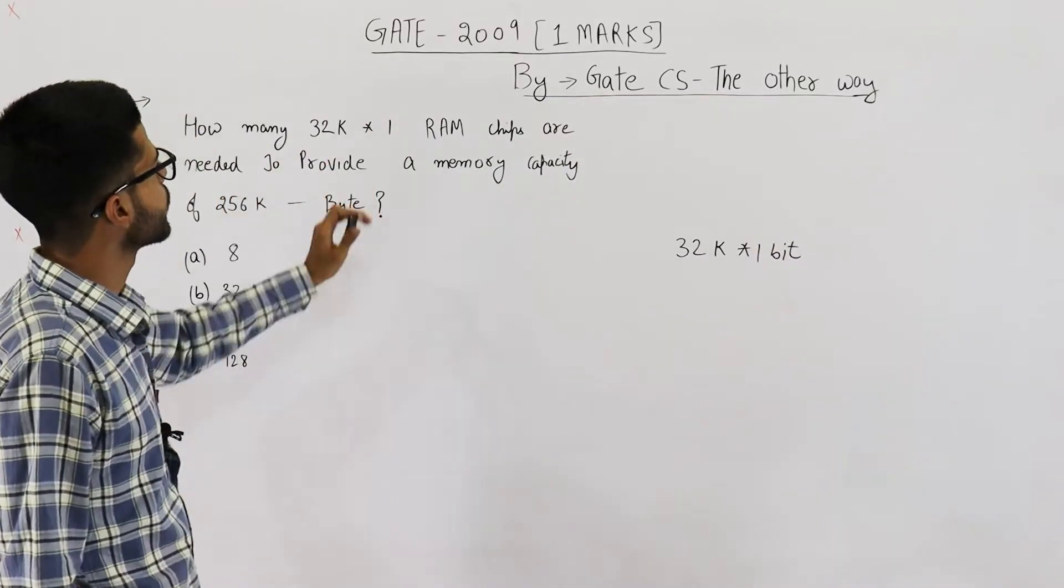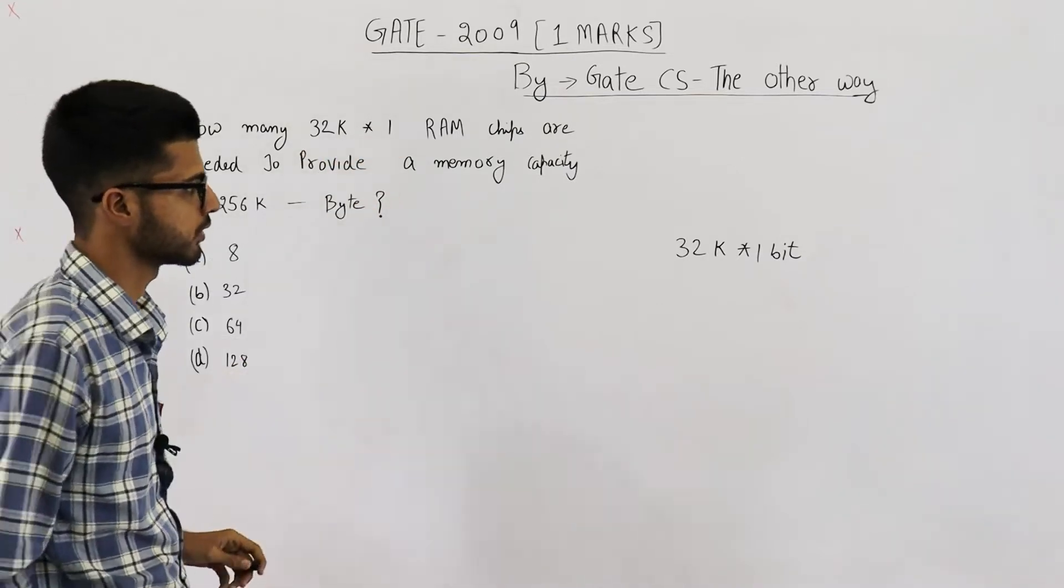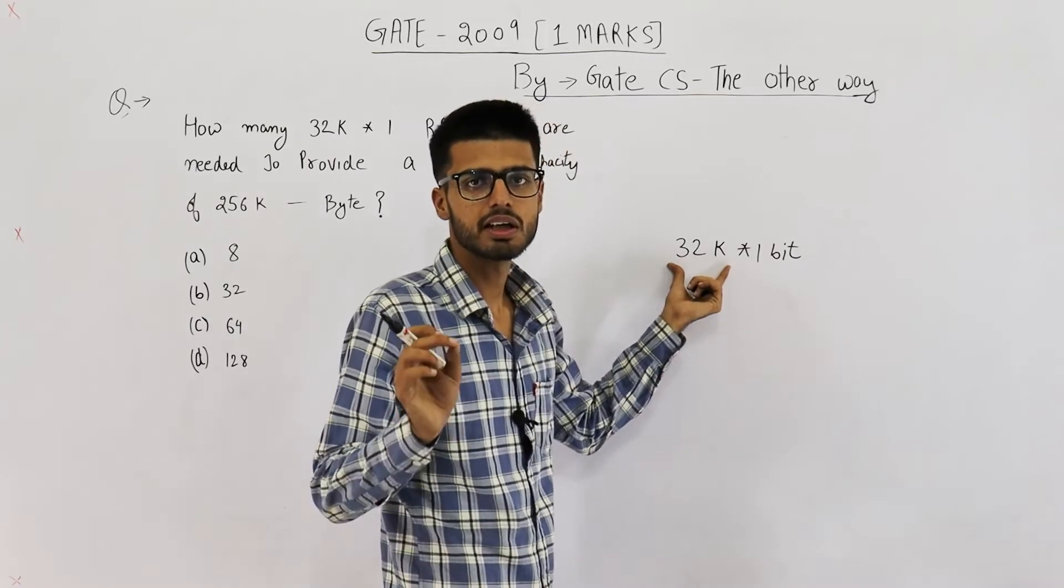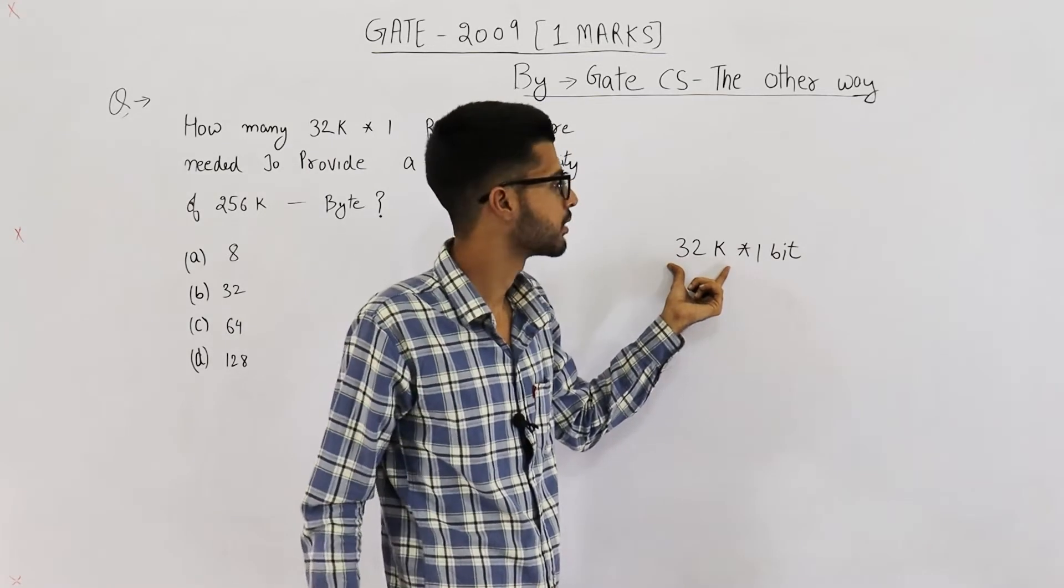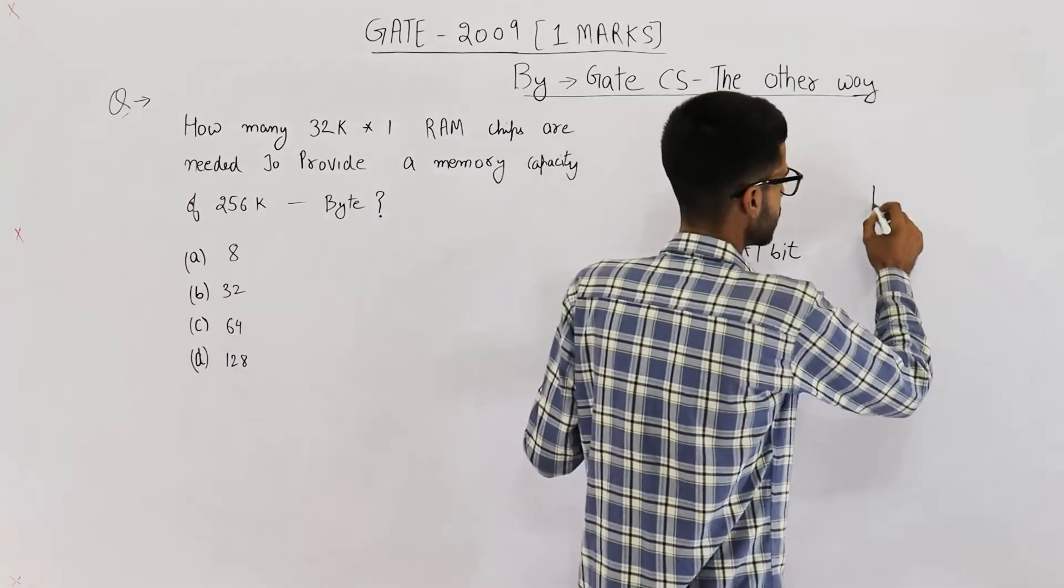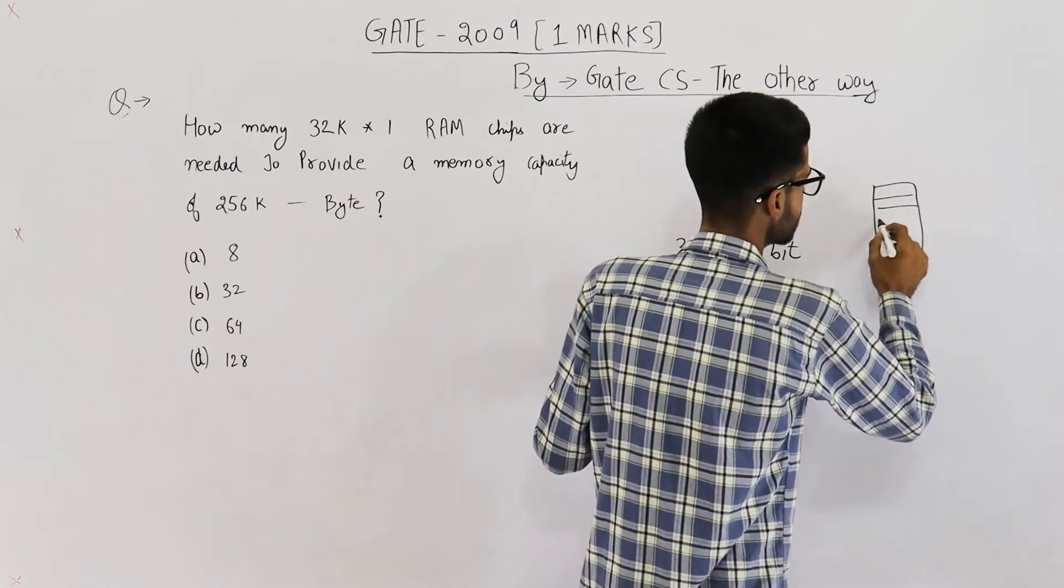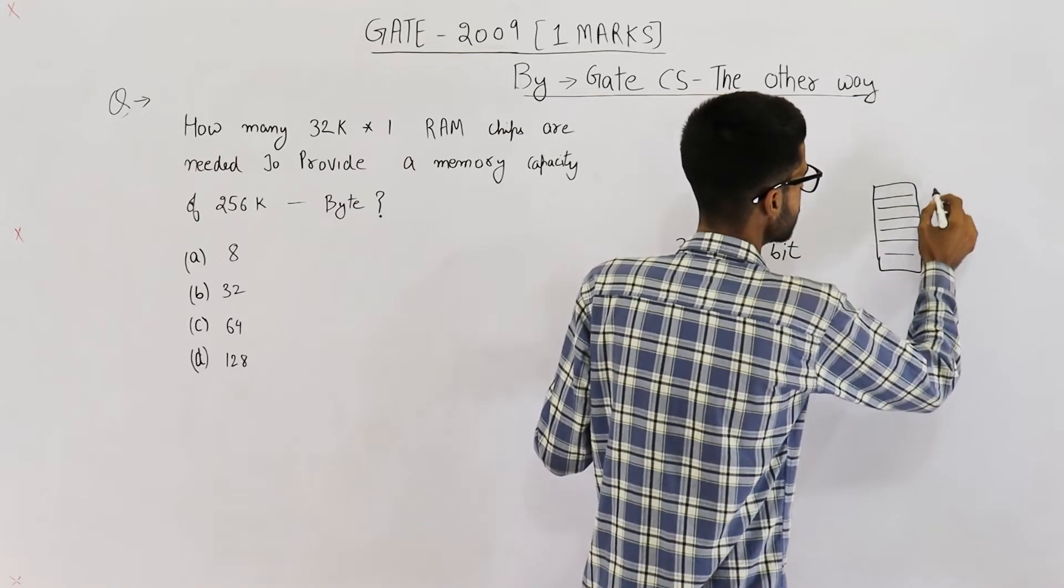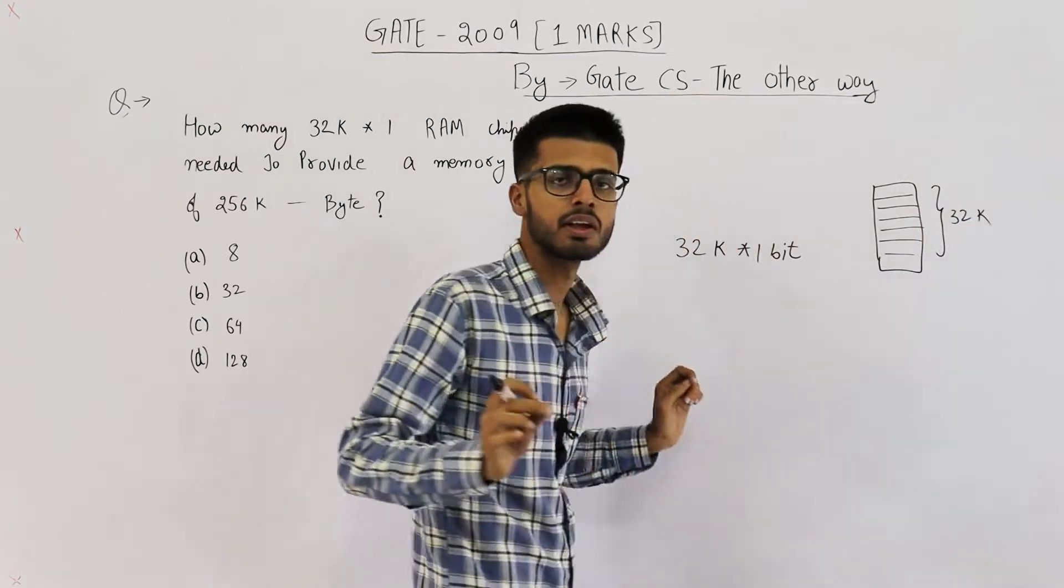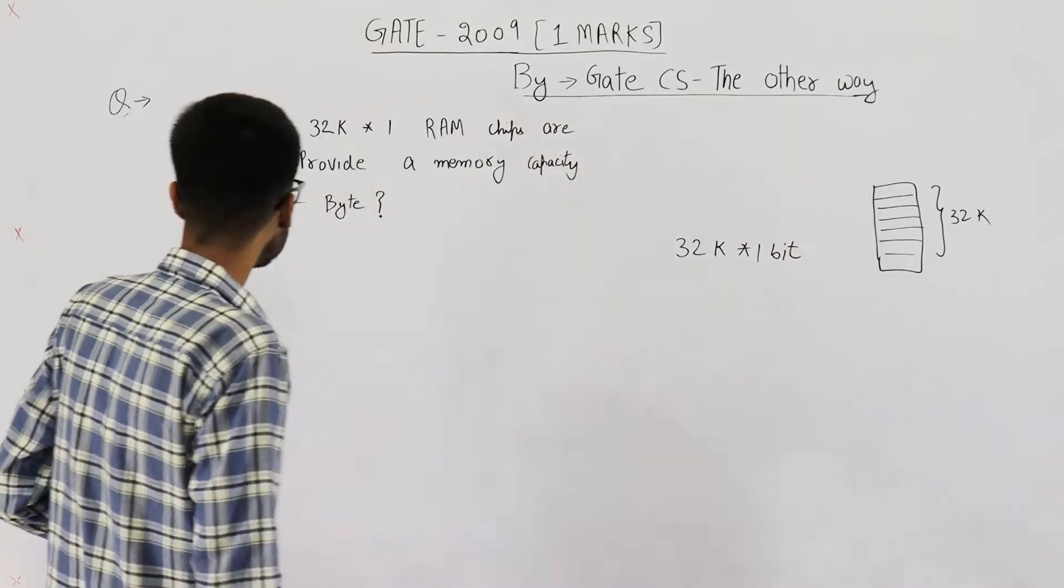And also let's talk about this notation. What is the meaning of 32k x 1 bit? It means there must be 32k different locations in our memory, each of size 1 bit. That means the chip that they have given is such a chip where you have 32k unique addresses and 1 bit data can be saved at every address.